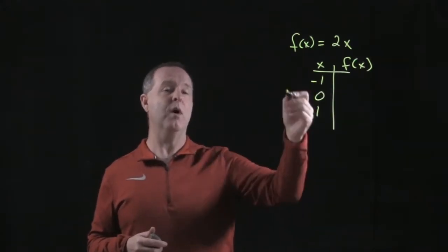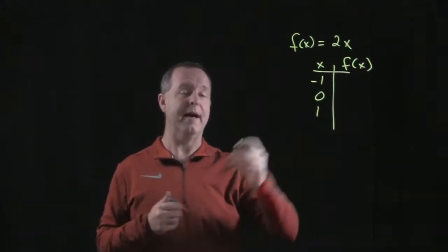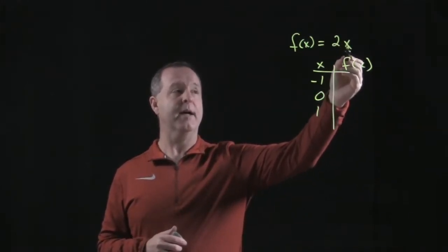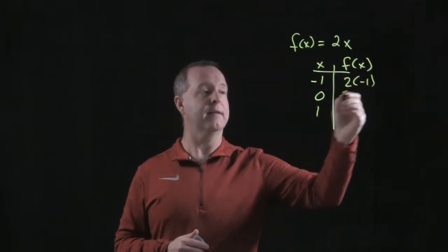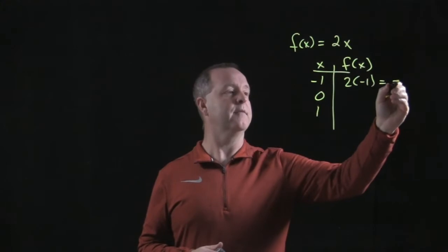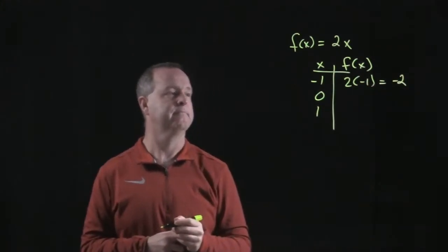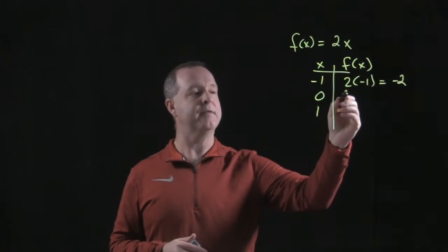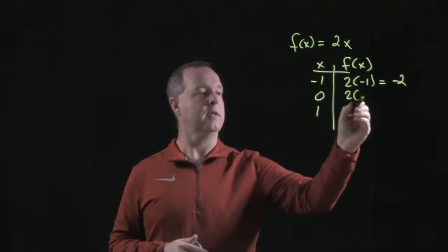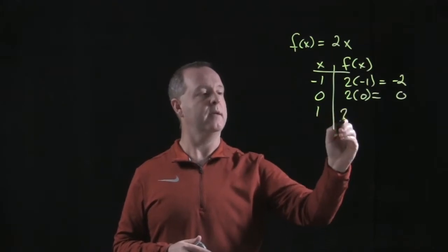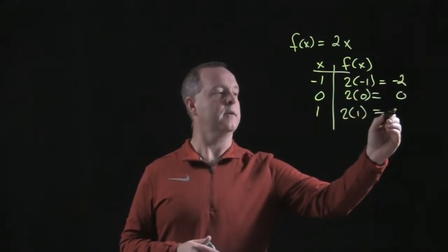So when I put negative 1 into this function, what's f(x)? Negative 1, I would put that in for x, so it would be 2 times negative 1, which equals negative 2. When I put 0 in, f of that becomes f(0), so it's 2 times 0 equals 0, and then with 1, 2 times 1 equals 2.